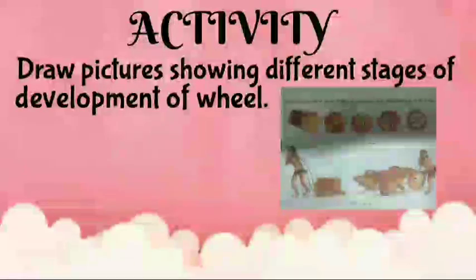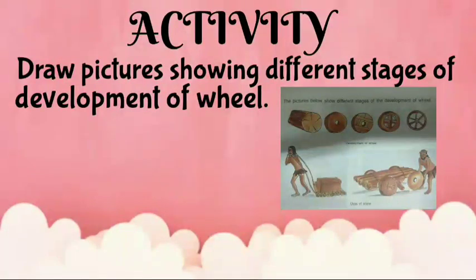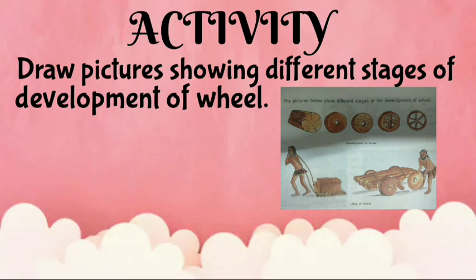Children, this chapter is an activity-based chapter. We will not do question answers from this chapter — only MCQs, blanks, and matching will be done. Today's activity is: draw pictures showing different stages of development of the wheel and uses of the wheel. It is compulsory for all of you to send this activity to your class teachers.